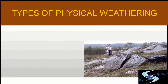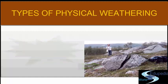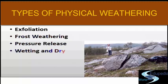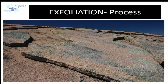Physical weathering is the breaking up of rocks through physical processes. The broken pieces of rocks are similar to the parent rock in chemical composition. Physical weathering may happen through exfoliation, frost weathering, pressure release, wetting and drying, burrowing animals, and plants. In hot and dry regions having a very high daily range of temperature, massive rocks like granite are exposed at the surface and separate into thin concentric successive shells. The thickness of an individual shell or flake may be a few millimeters.